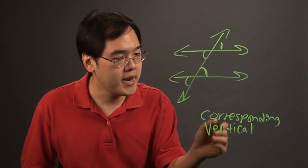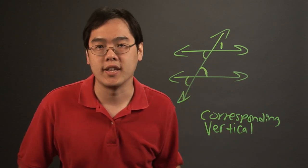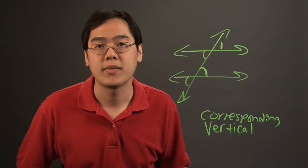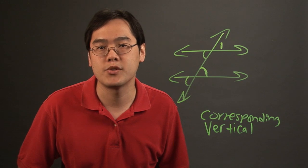So the corresponding angles and the vertical angles will always be kinds of angles that will be congruent to the given angle that's provided. So I'm Jimmy Chang, and that answers the question, which angles will always be congruent to angle one if the side strips are parallel.